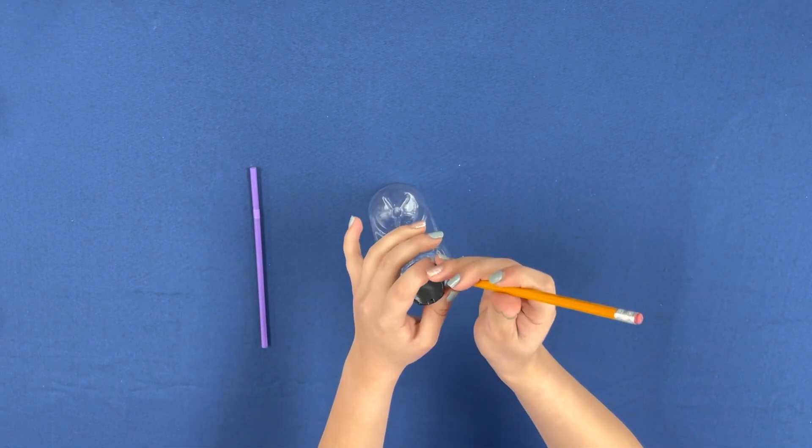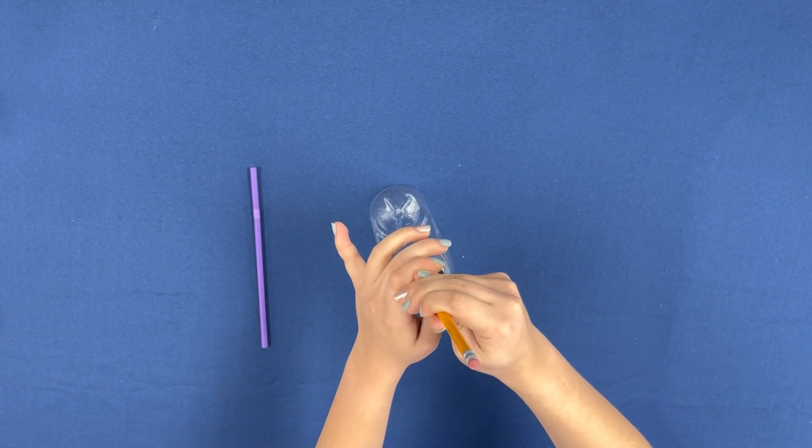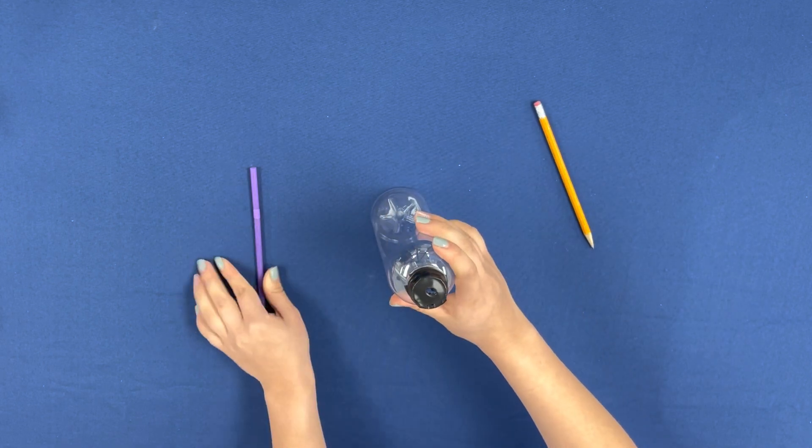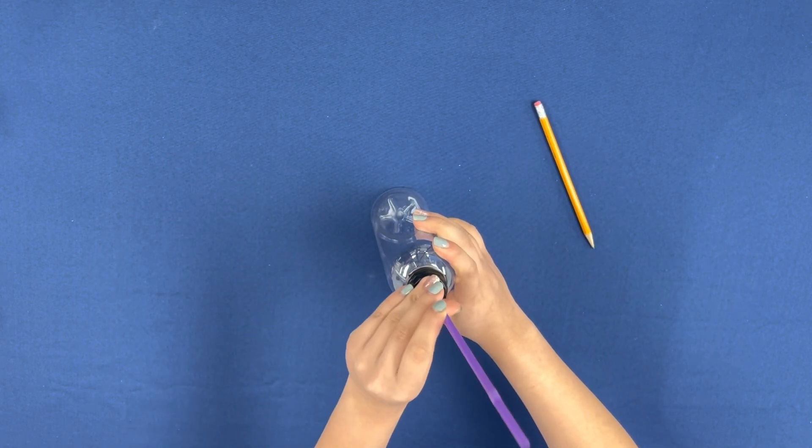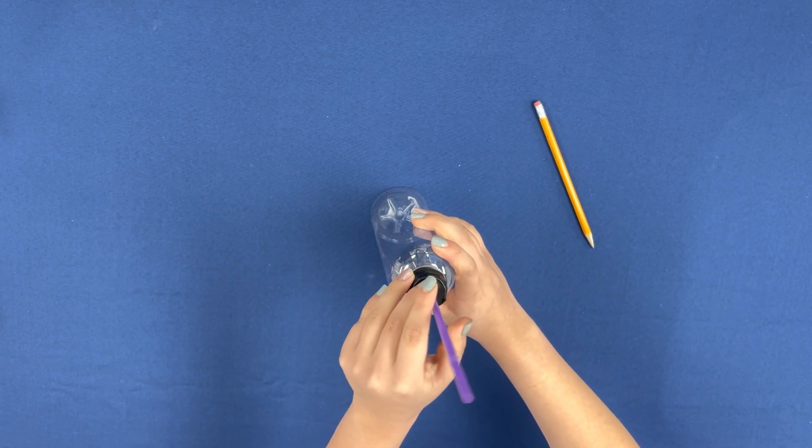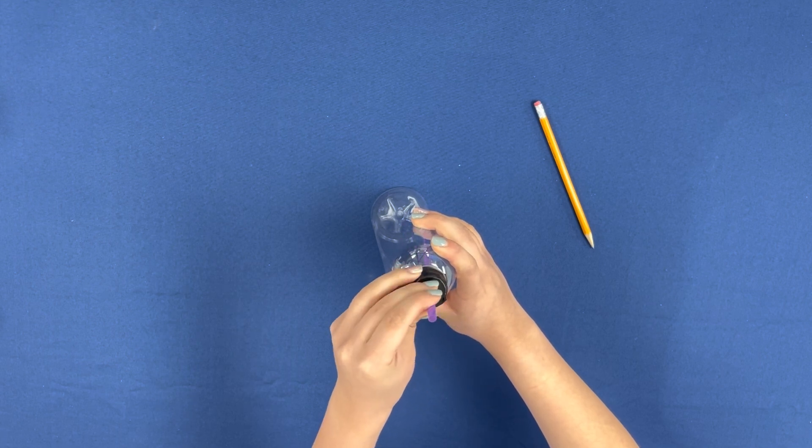With a pencil, poke the top to make a hole to fit your straw. Now we can put the straw into our water bottle so it looks a little like this.